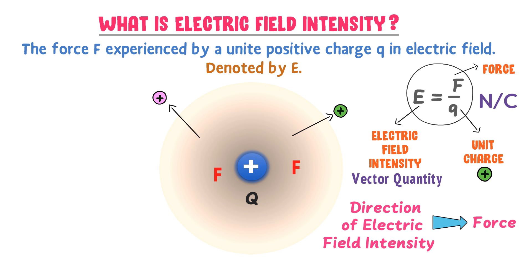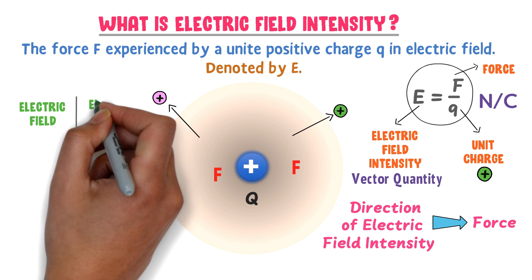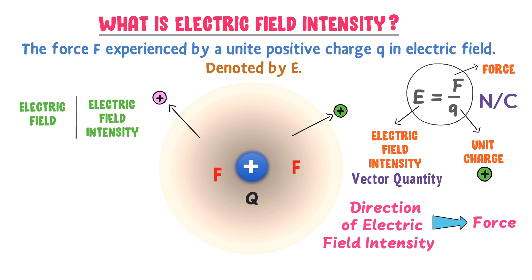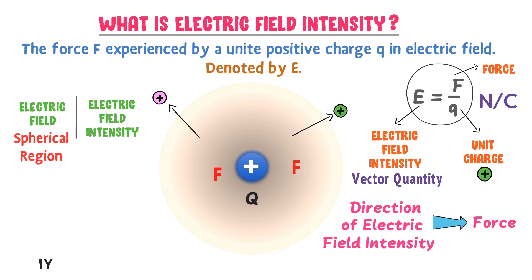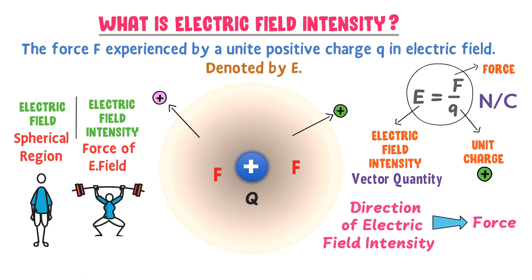As a bonus tip, let me teach you a favorite question: what is the difference between electric field and electric field intensity? Electric field is the spherical region around any charged particle, while electric field intensity is the force of the electric field exerted on a unit test charge. We can also say that electric field is the man and electric field intensity is its strength. So remember: electric field is the region, and electric field intensity is its force.